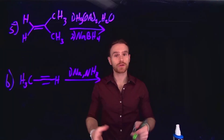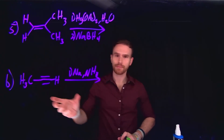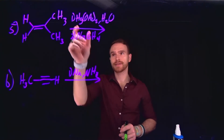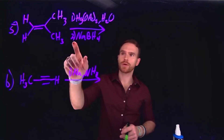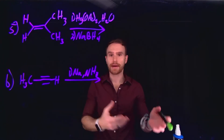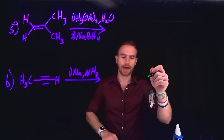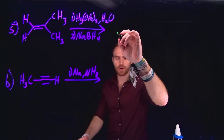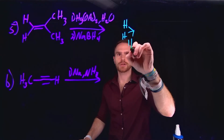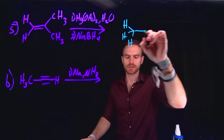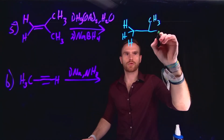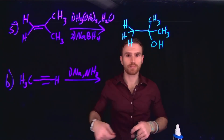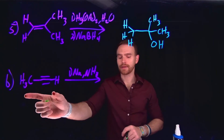The next reaction is an example of adding an alcohol in Markovnikov fashion — this is called oxymercuration followed by demercuration. In the first step, the alcohol adds in Markovnikov fashion and you get an intermediate with a mercury compound on it. You then need to reduce that mercury compound to get back the alkene and remove the mercury. This gives a product where the alcohol is on the more substituted carbon. That's oxymercuration followed by demercuration. The final step is reduction of an alkyne to an alkene.